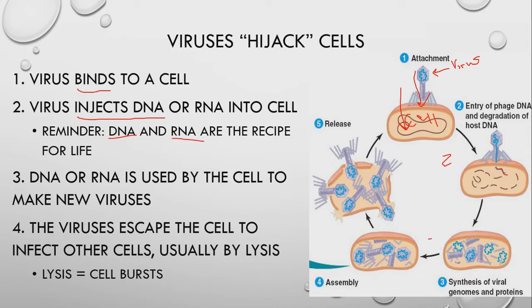That's step two. Your cell doesn't know that there's different DNA in it, and it begins basically reading the recipe — and the recipe is for making new viruses. That's step three. So the cell doesn't realize what it's doing, but because this viral DNA is in it and the viral DNA is a recipe to make more viruses, the cell accidentally starts making more viruses. Eventually so many viruses build up in this cell that the cell basically dies and all the viruses are released out of the cell to go infect more cells.